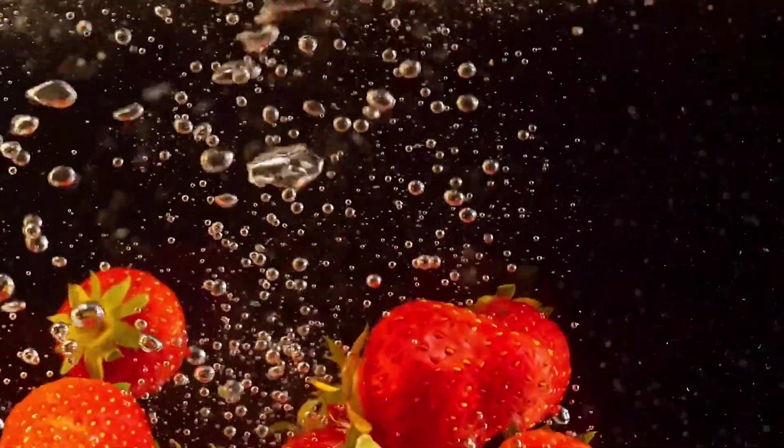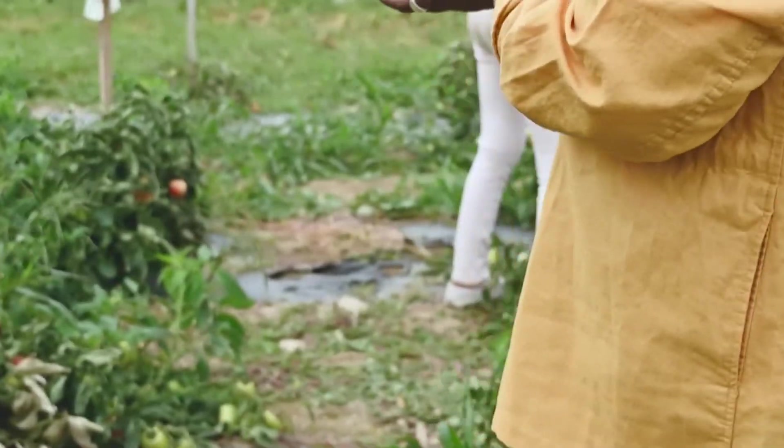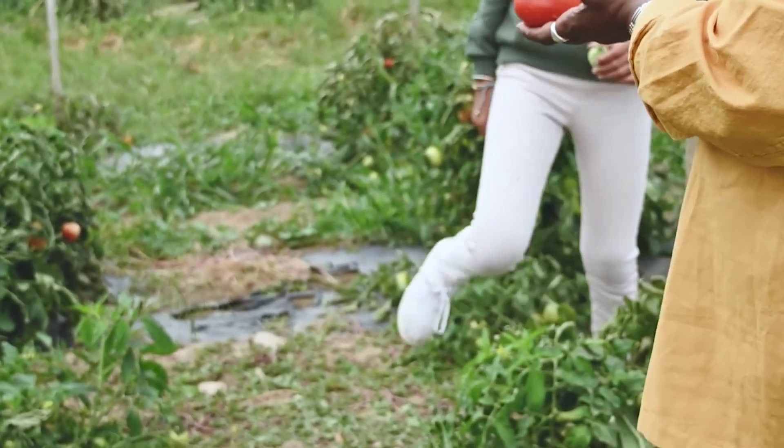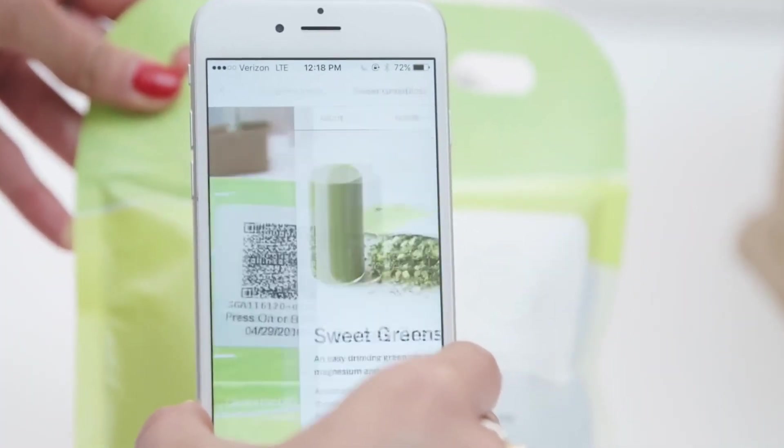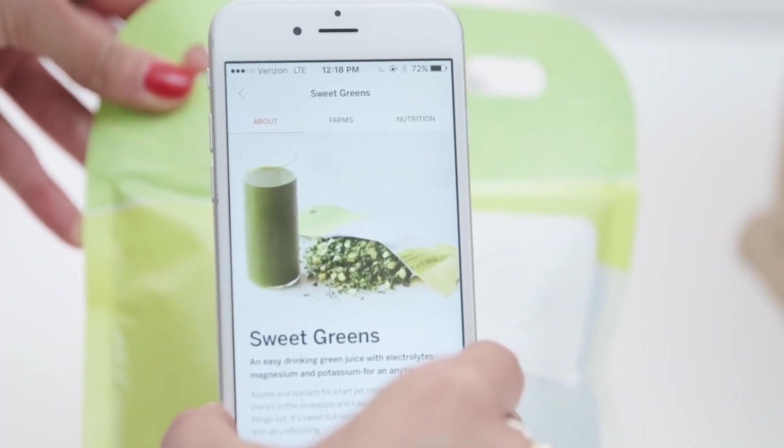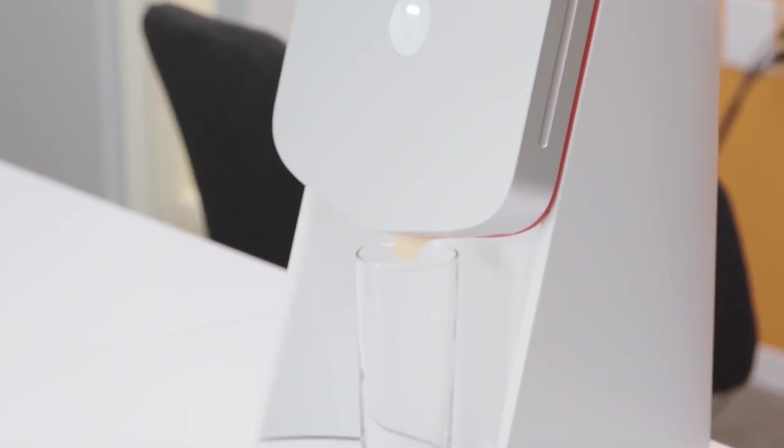Their commitment to freshness was unparalleled. Partnering with local farmers, Juicero ensured that their produce was processed within days of being harvested. Each packet came with a QR code that the machine would scan to determine the freshness of the juice. If it wasn't up to par, the machine simply wouldn't press it.